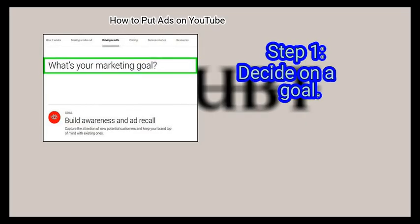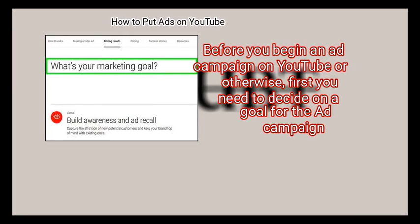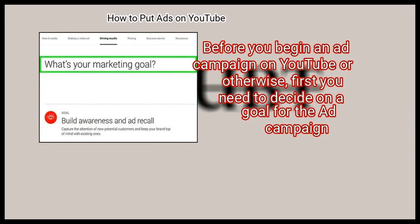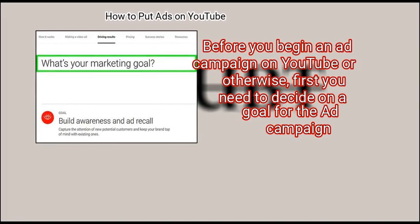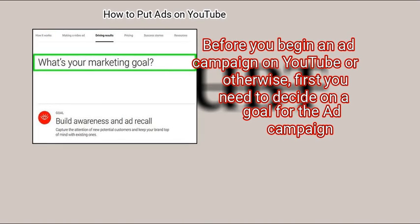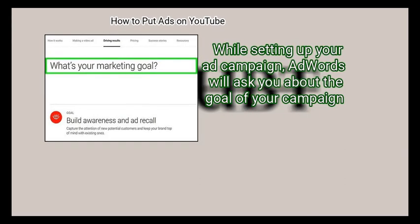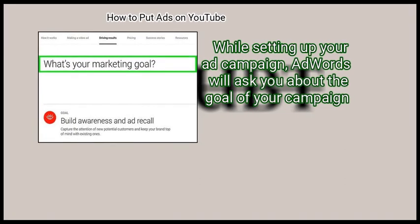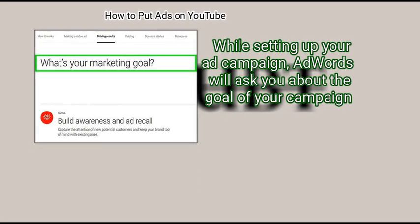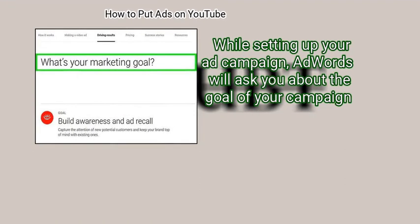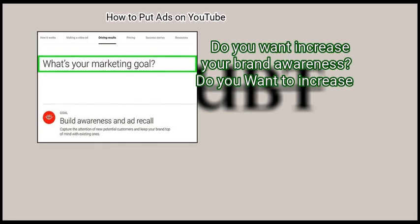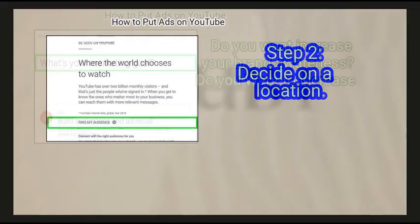Method 1: Planning a YouTube Ad Campaign. Step 1: Decide on a goal. Before you begin an ad campaign on YouTube or otherwise, you need to decide on a goal for the ad campaign. While setting up your ad campaign, AdWords will ask you about the goal of your campaign. Do you want to increase your brand awareness?